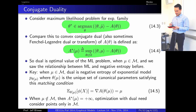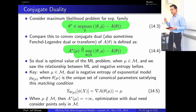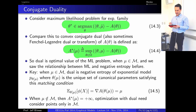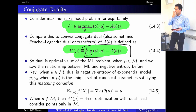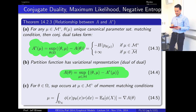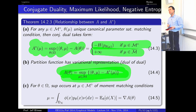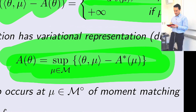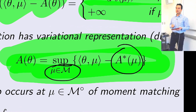We saw a very interesting correspondence between the maximum likelihood problem and the conjugate dual. This gives us an avenue for approximation by taking the dual of the dual. The dual value at mu corresponds to the negative entropy when the mean parameter is in the mean space, and this expression for the log partition function (equation 14.4) lets us approximate either the mean space or the entropy approximation, or both.